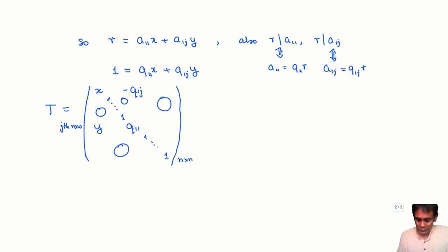So the only interesting thing is it is basically the identity matrix, except for the two diagonal entries are changed to x and q_11, and the corresponding off-diagonal elements are y and minus q_1j.